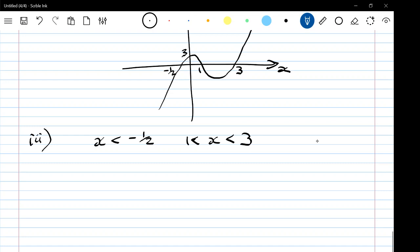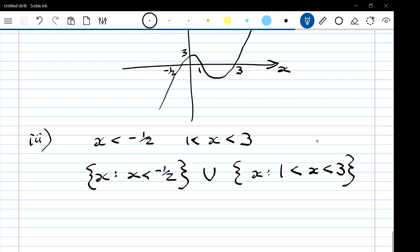So what we're saying is that x has to belong to the first set of things, which we write like that. And x has to belong to the second set of things. So it belonged to the set of 1 up to 3. And that's the form that they were looking for. That's what they wanted with the union symbol in between.